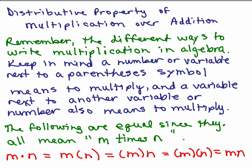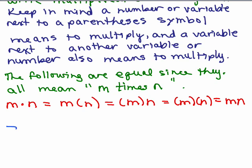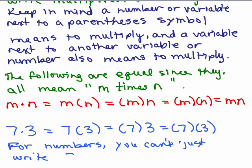Now just keep in mind that it's different for numbers. So if instead of an n you had something like 7 times 3, you could have it written almost all of these ways. You could not just put the 7 next to the 3. So for numbers, you can't just write 73 to mean multiply. As long as one of them is a variable, you can write it this last way, just putting them next to each other.